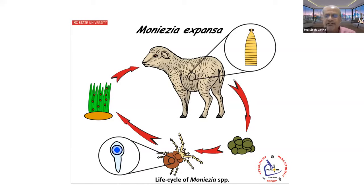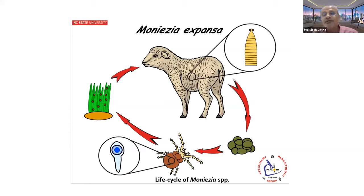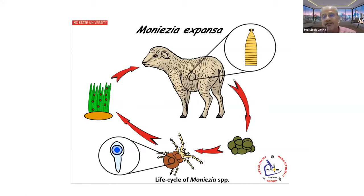Oribatid mites have a typical tendency during early morning or late evening to migrate on grass blades where there are dew drops. These are exactly the timings when animals are usually let loose for grazing, and that is how they readily become infected with oribatid mites containing the infective stages of Moniezia and other tapeworms.